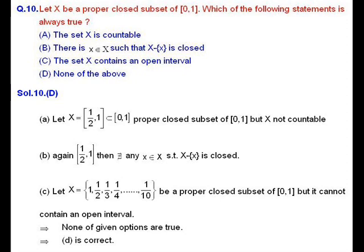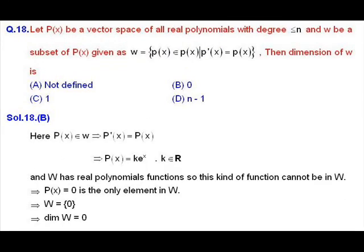For option B, take X as the closed interval [1/2, 1]. Here we cannot find any element in X such that X minus that element is a closed set, so option B is also incorrect. Since none of options A, B, C are correct, option D is the only correct answer.